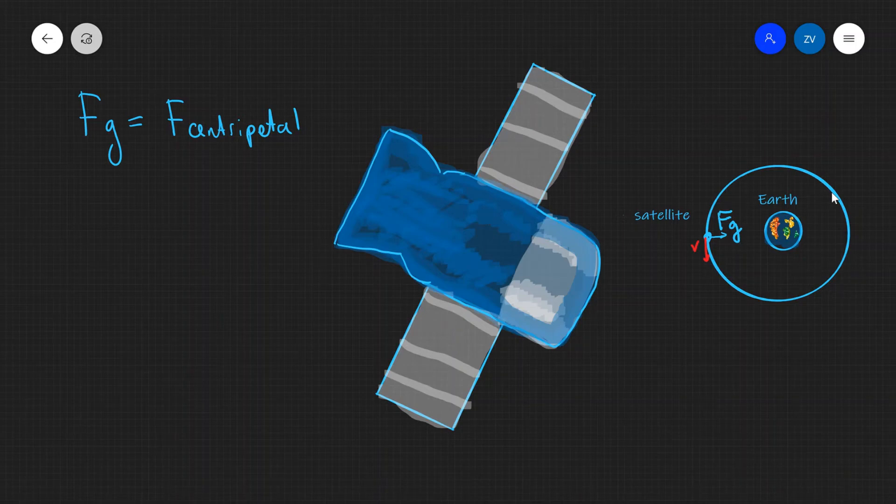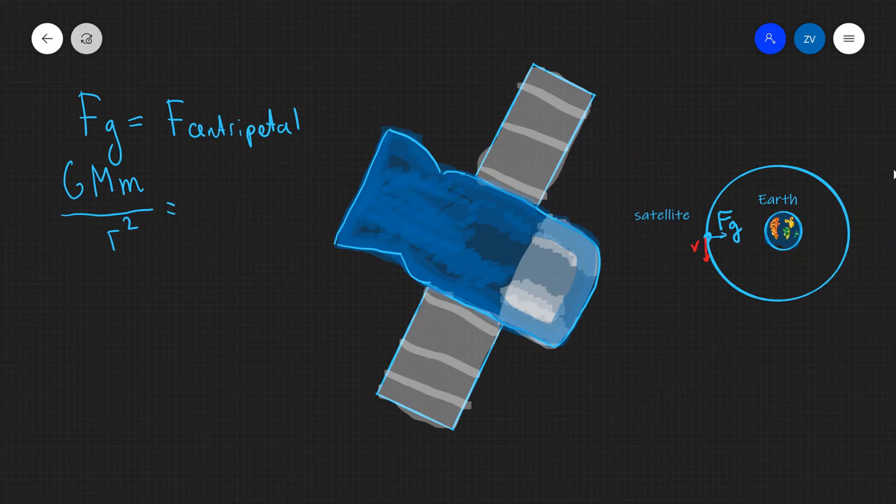The gravitational force is, the magnitude of the gravitational force is GMm over r squared. I'm just looking at the magnitude so I'm not taking into consideration the minus sign. And this is going to be equal to the centripetal force which is just mv squared over r.